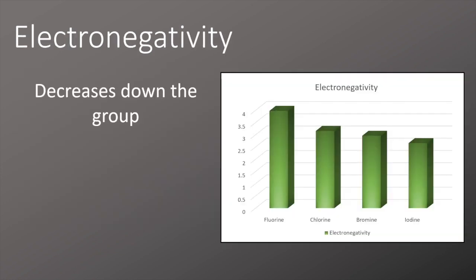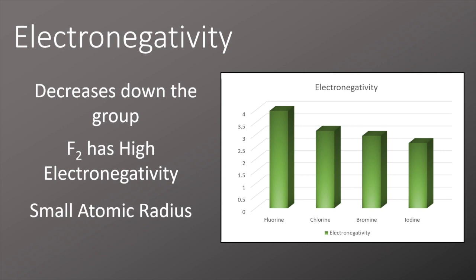Electronegativity of the group 7 decreases as we go down the group. Remember, electronegativity is all to do with the atom's ability to attract an electron. Many of the same factors which affect ionisation energies also affect electronegativity. The bigger the atom, the weaker electronegativity, so fluorine is the most electronegative atom with a value of 3.98. It's a small atomic radius, which means it's very close to the electron being attracted in. There's also minimal shielding to get in the way.